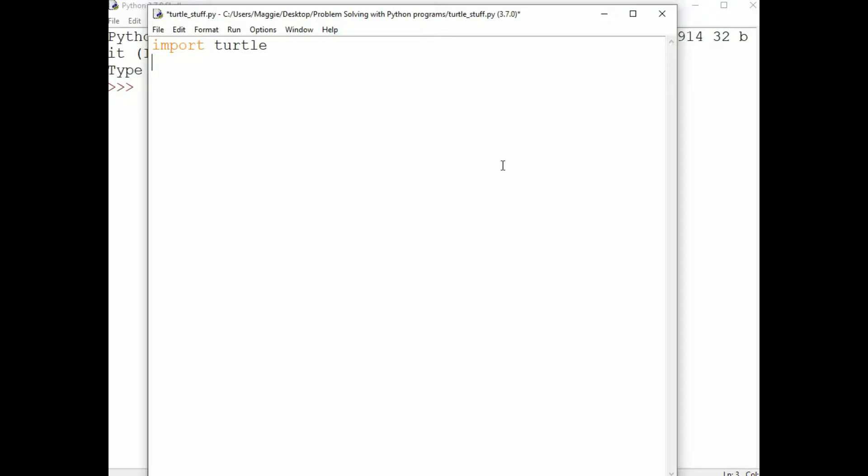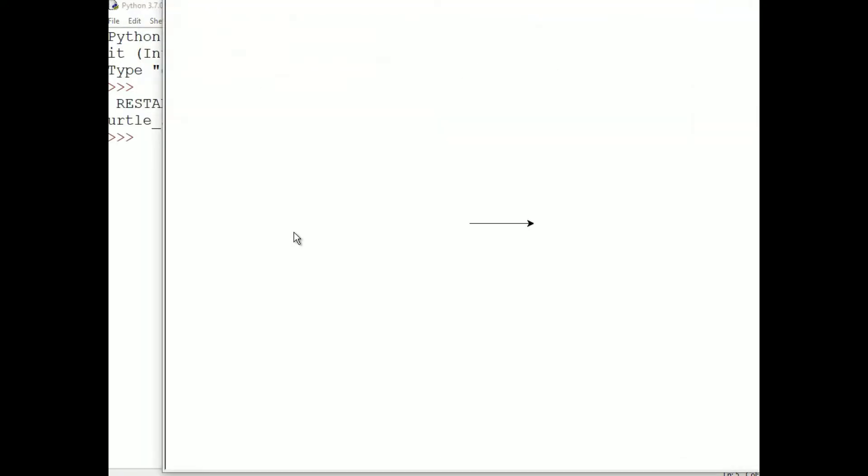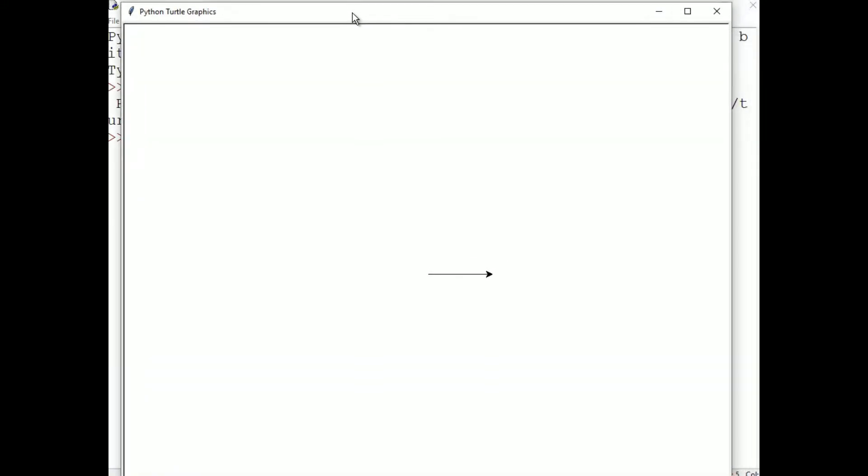Now let's just write a quick program so we can see what Turtle Graphics looks like. On the next line, write turtle.forward(100). Now if we save our program and run it by choosing Run Module from the Run menu, we see a new window come up, the Turtle Graphics window.